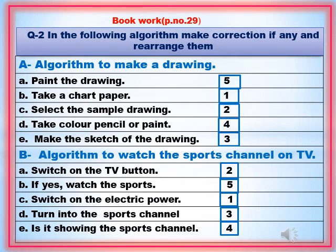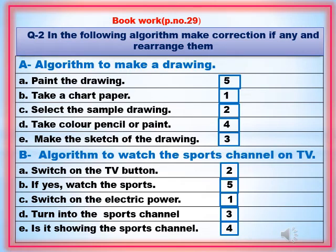Part B: Algorithm to watch the sports channel on TV. If we want to watch a sports channel on TV, the steps we need, arranged in sequence: Number 1: switch on the electric power. Number 2: switch on the TV button. Number 3: turn to the sports channel. Number 4: is it showing the sports channel? If yes — Number 5: watch the sports.